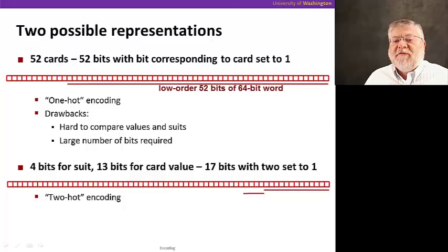It's going to be really hard to compare values and suits, because we have individual bits throughout those 52, where we have to look at the value and suit of the card. And we have a large number of bits to represent one card, an entire 64-bit word. This is called a one-hot encoding, where only one bit is on.